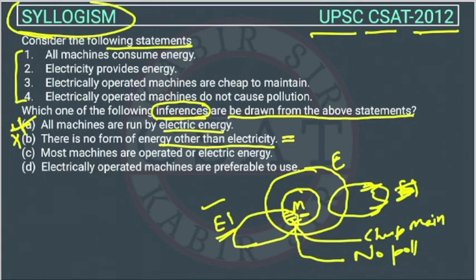Option C: most machines are operated on electric energy. But there is no such indication — they may be operated on other forms of energy also. So this option is also wrong.